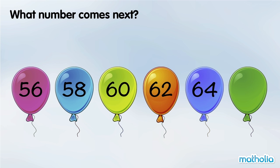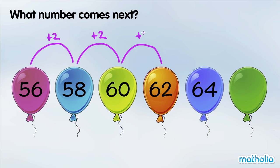What number comes next? 56 plus 2 is 58. 58 plus 2 is 60. 60 plus 2 is 62. In each step, the numbers go up by 2. 64 plus 2 is 66. The next number is 66.